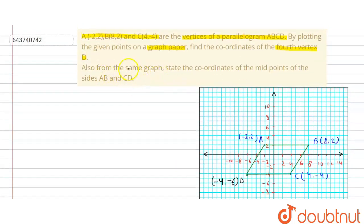From the same graph we also find the midpoint of AB and CD. The midpoint of AB: counting one, two, three, four, five blocks, we take the 2.5 point. So the midpoint of AB is at X = 3, Y = 2, giving coordinates (3, 2).